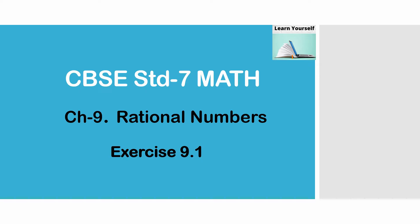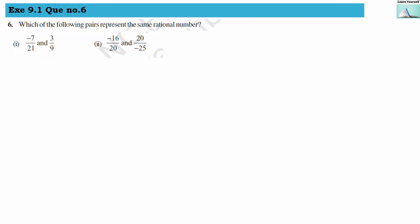Welcome to Learn Yourself, Exercise 9.1, Question number 6: which of the following pairs represent the same rational number? Let us understand the concept first. Whenever they have given us two rational numbers, first we have to simplify them.